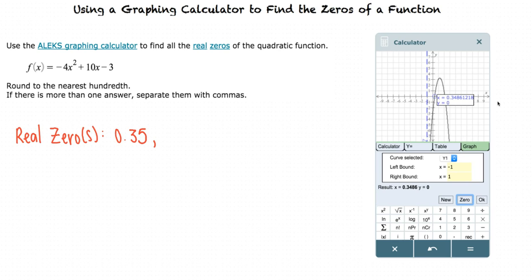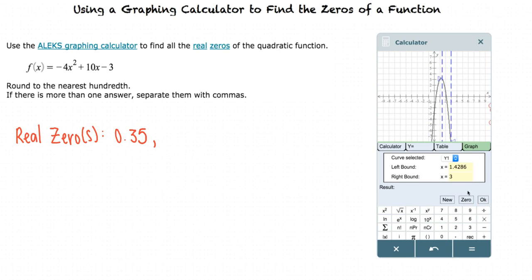We now know one of the zeros, but since the graph crosses the x-axis twice, we still have to find the other zero. We can do this by clicking new, dragging the lines to the appropriate places, and clicking zero to find our second x-intercept.